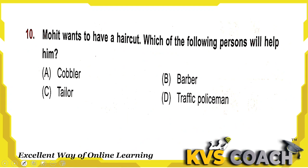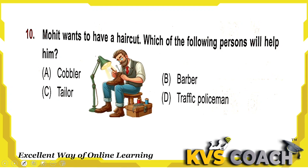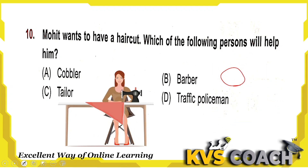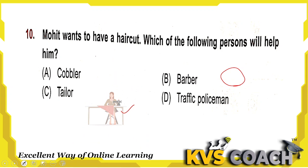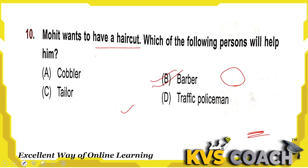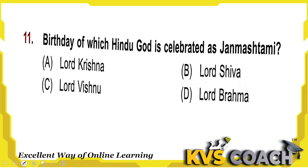Next: Mohit wants a haircut — which person will help? A cobbler mends shoes, not hair. A barber cuts hair. A tailor sews clothes. A traffic policeman directs traffic on roads. The person who cuts hair is the barber. Option B is the right answer.